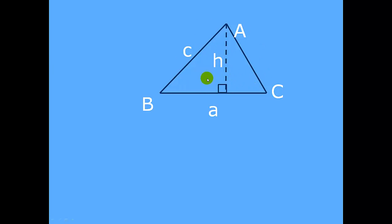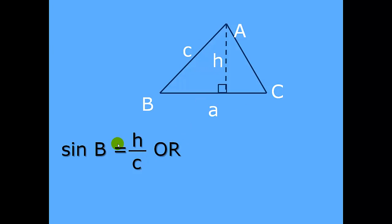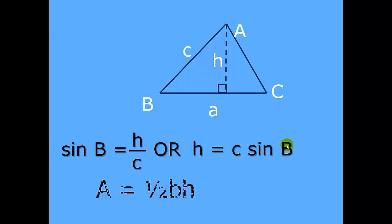This creates two right triangles. From trigonometry, the sine of angle B is equal to opposite over hypotenuse — in this case, H over C. We're trying to find out what H is, so let's solve for H. H is equal to C times sine B, if you multiply both sides by C. And if that altitude H equals C sine B, we can go back to the original formula from geometry.